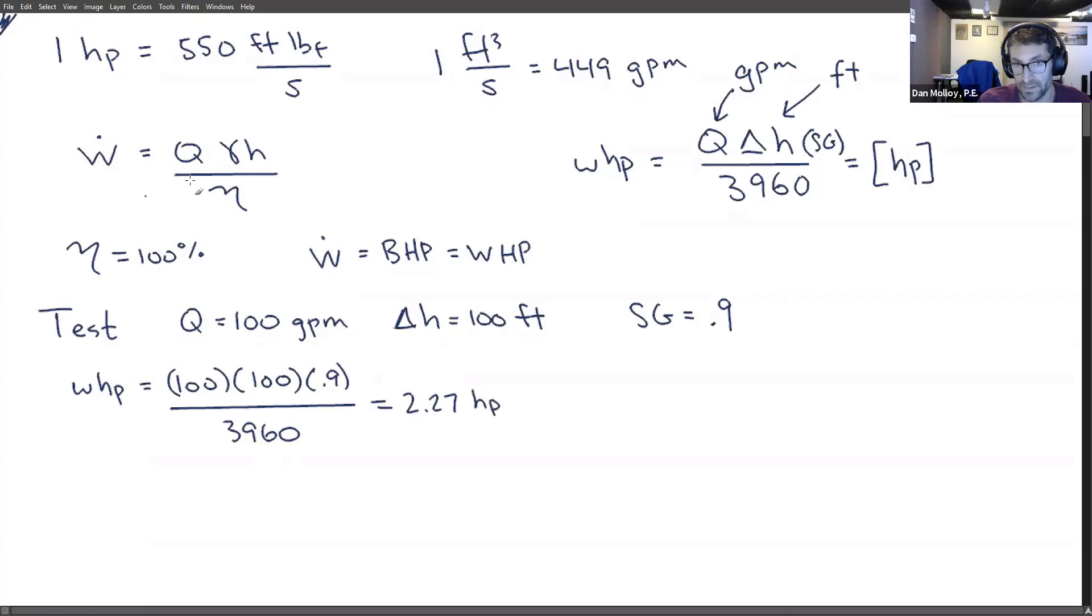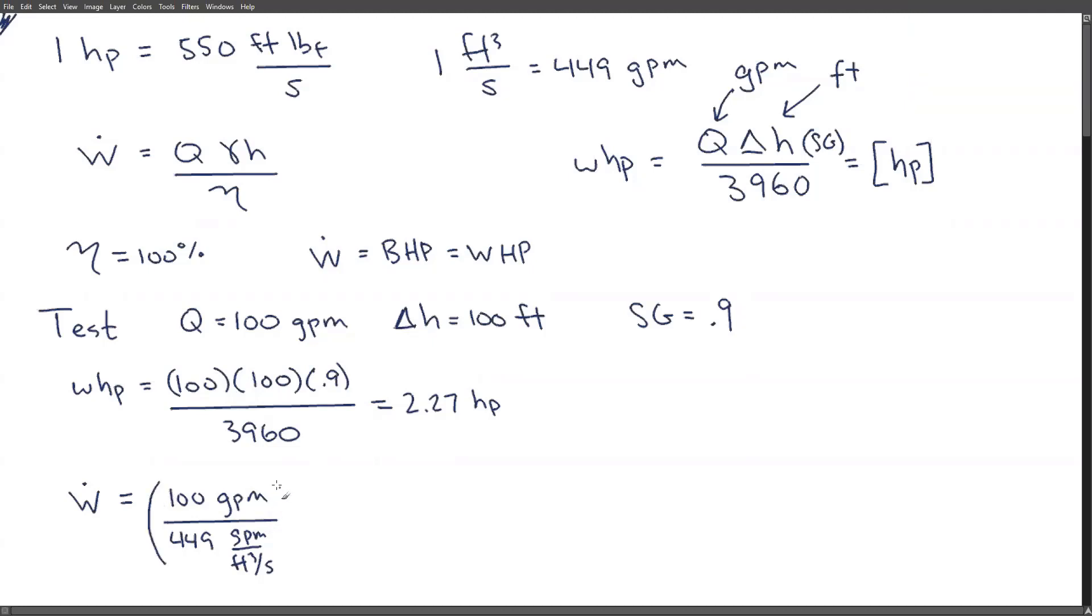And now let's check that against this equation. So we're saying the work developed by the pump should be the same as the hydraulic horsepower for 100% efficiency. But now we've got to do a whole bunch of unit conversions. So let's have some fun. We're going to start with 100 GPM and then divide by 449 GPM per cubic foot per second. And then we're multiplying by the gamma. Let's talk about gamma for a moment. What is the definition of specific gravity?